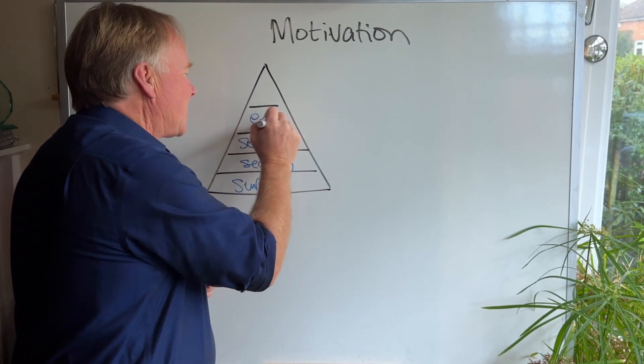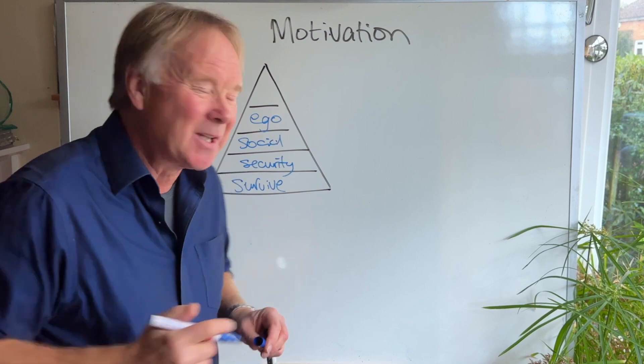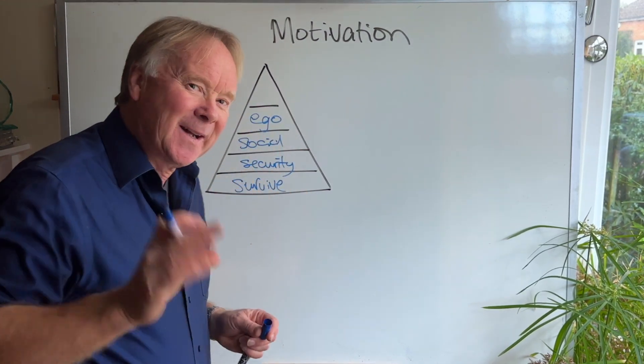The next level is ego needs, status. So give them ownership of something that's theirs so they feel important. And then the final ultimate level, which is where we want to get everyone up to, is self-actualization.